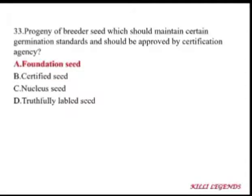The progeny of breeder seed is foundation seed, which must maintain certain germination standards and be approved by a certification agency. The progeny of foundation seed is certified seed. Nuclear seed is a handful of seeds maintained by the breeder himself. Breeder seed has a golden yellow tag, foundation seed has a white tag, and certified seed has a blue tag.